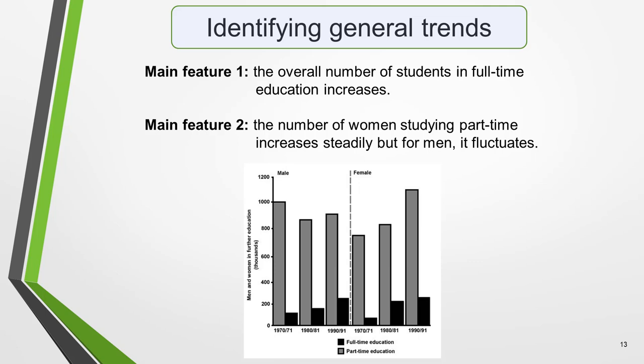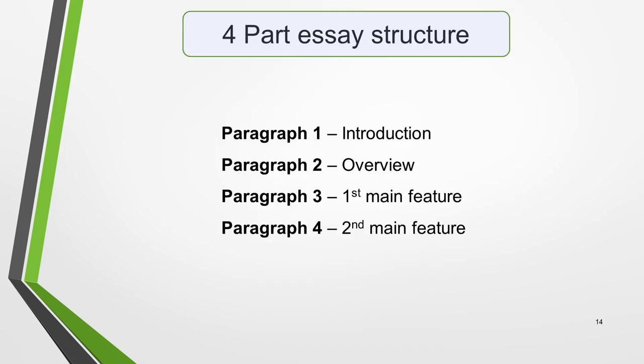The general trends you select will be the starting point for your essay. You will then go on to add more detail. Here's a quick reminder of the four-part structure for our essay. Paragraph 1 is the introduction, paragraph 2 the overview, paragraph 3 the first main idea, and paragraph 4 the second main feature. This structure isn't going to be an exact fit for every possible essay, but it's an excellent outline to work from.